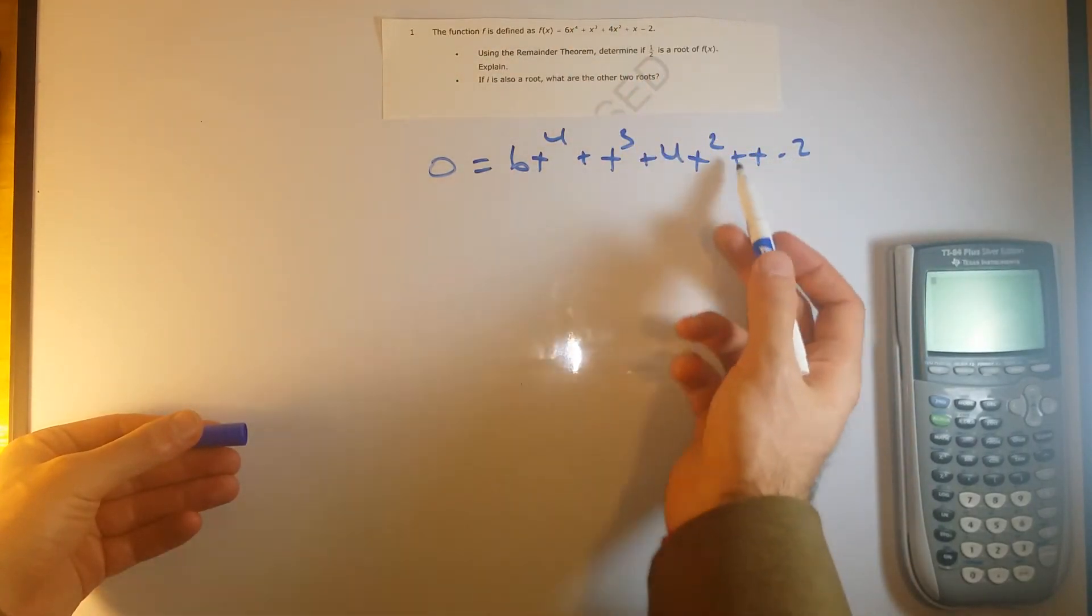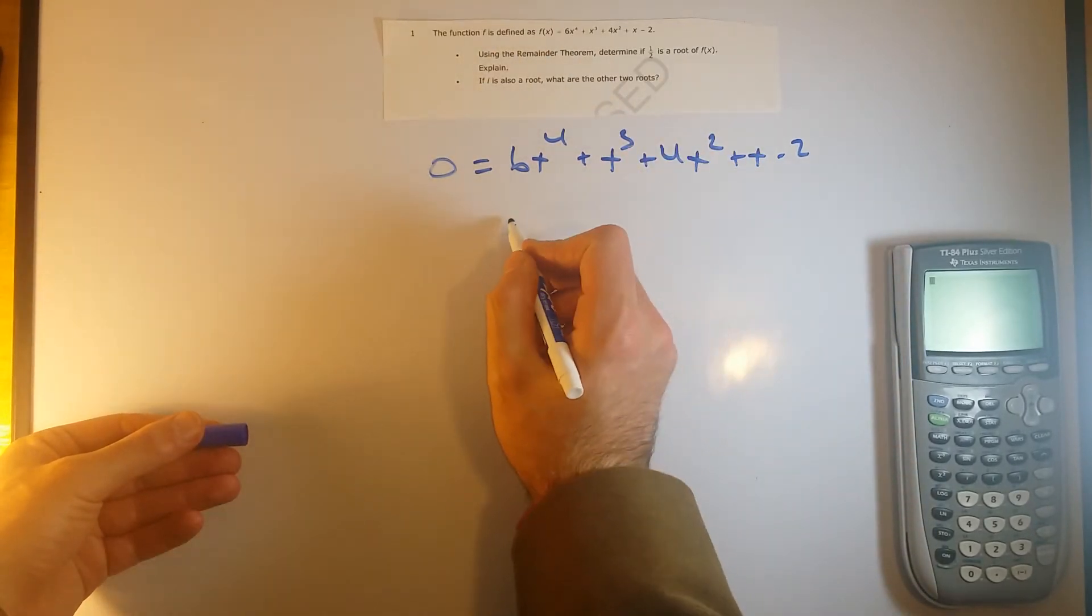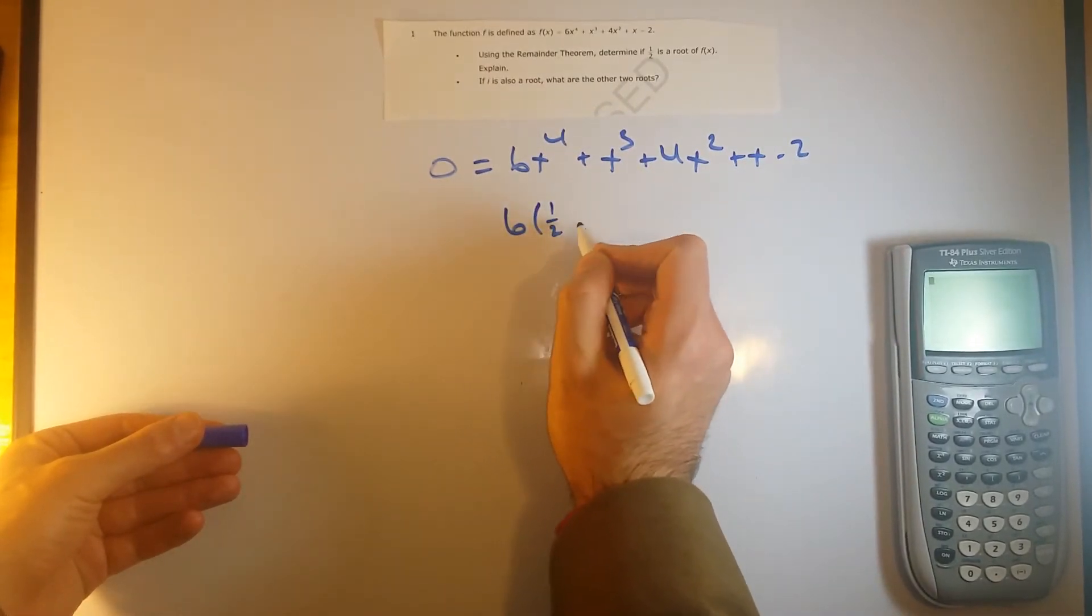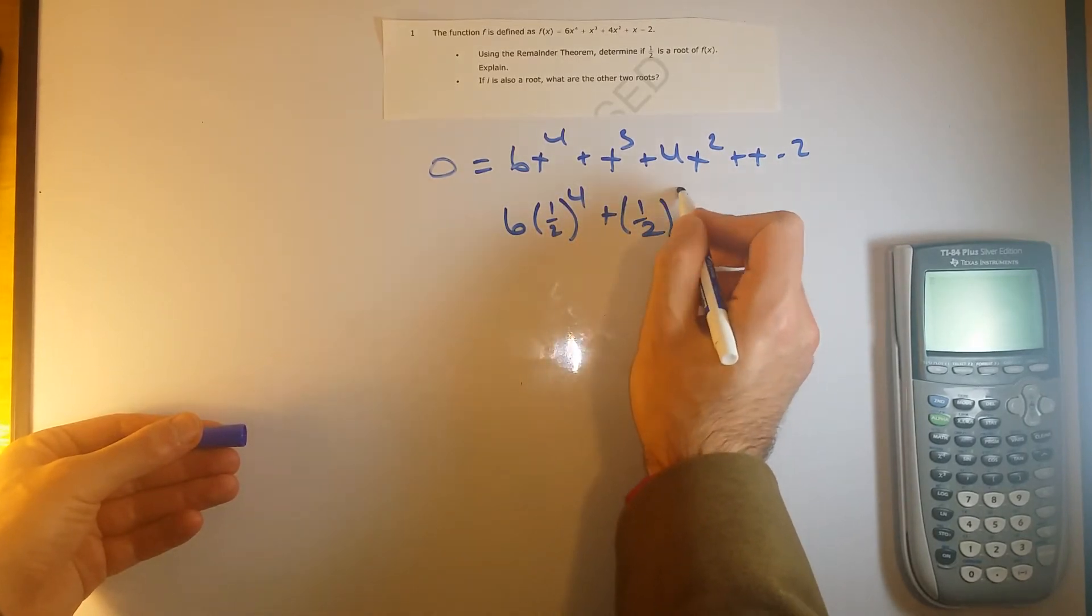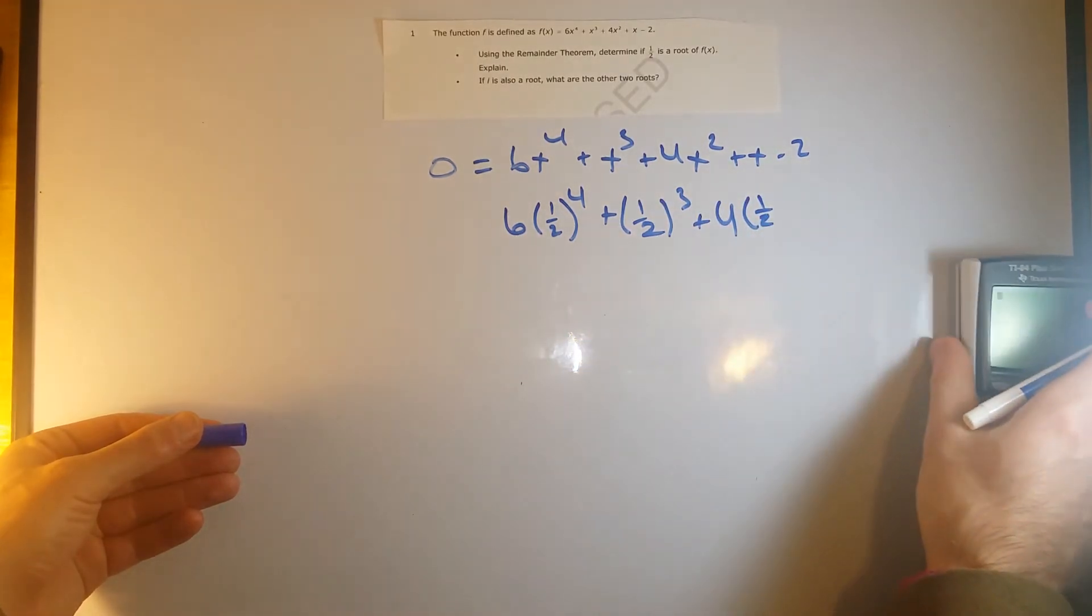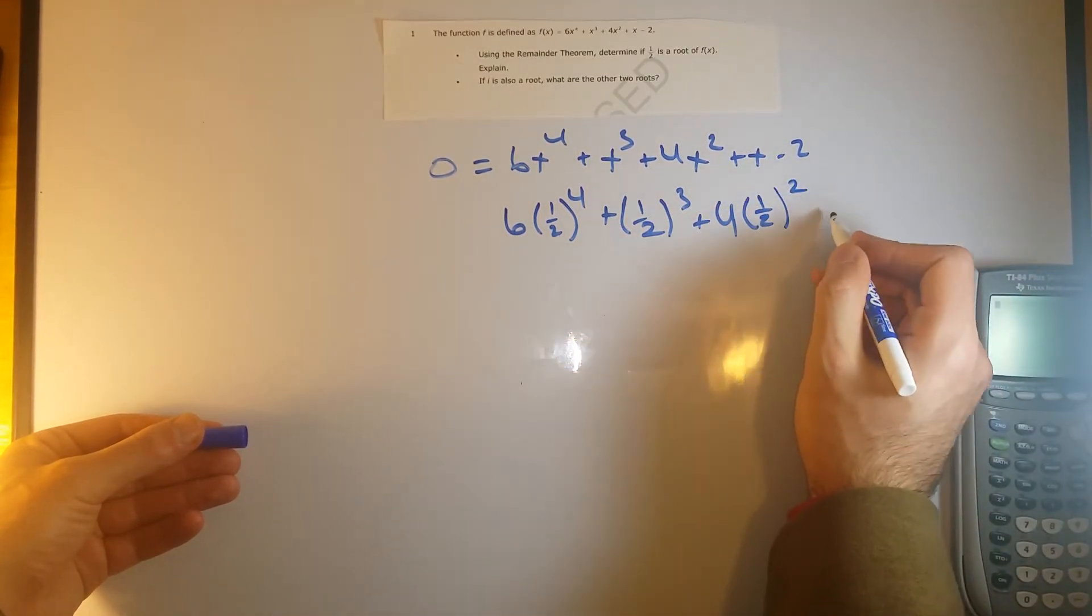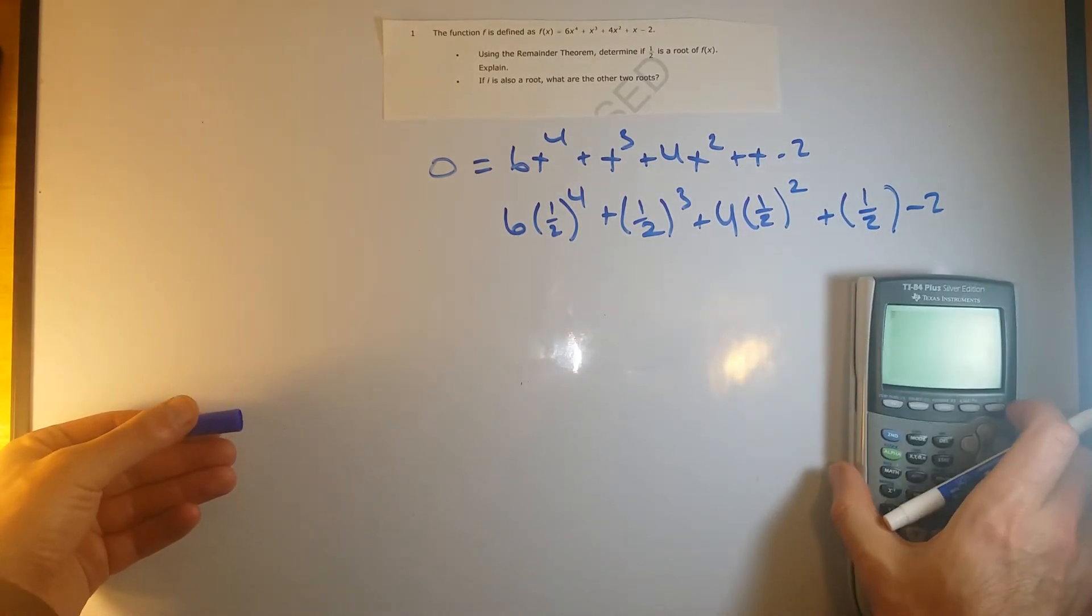Let's plug in 1 half, and if it comes out to 0, then we know it is a root. So if we were to plug in 6 times 1 half to the 4th plus 1 half to the 3rd plus 4 times 1 half squared plus 1 half minus 2. If this all comes out to 0, then we know that 1 half is a root.